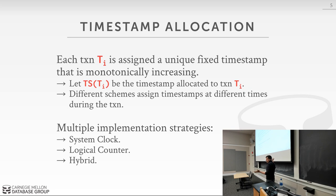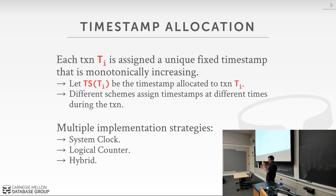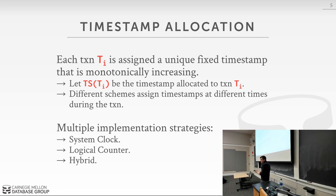One problem with using the system clock is daylight savings — we start assigning timestamps in order and then suddenly have to roll the clocks back an hour, or there's a leap second at year end. That screws up this scheme. Another approach is a logical counter: a single variable incremented by one each time a new timestamp is handed out to a transaction.